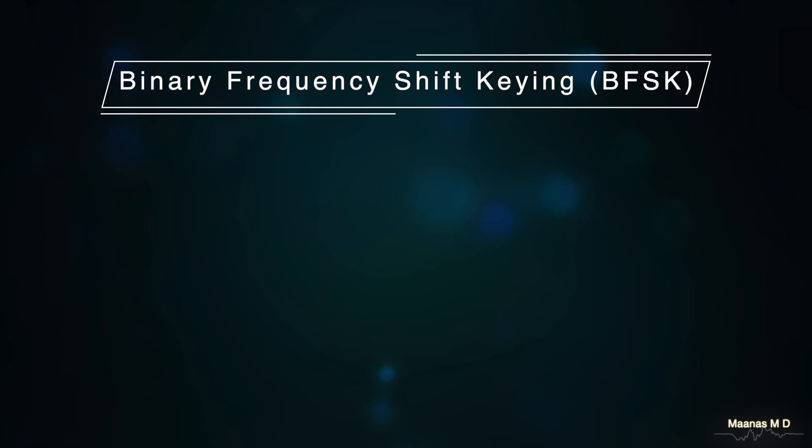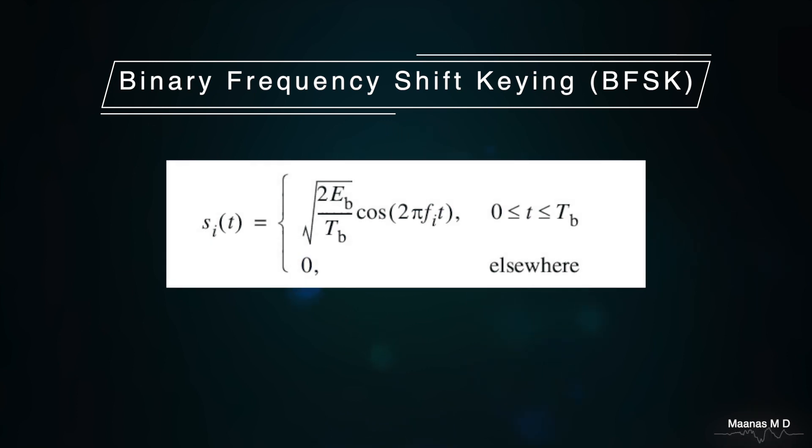Now let us look at the mathematical aspects of binary FSK. As displayed on the screen, we can see that BFSK can be represented as two signals S1 and S2 at different frequencies F1 and F2. The signal transmitted can be represented as root of 2Eb by T times cos of 2πfi(t), where fi can take two values F1 and F2.